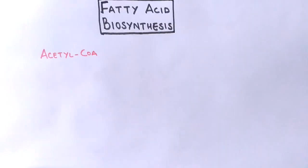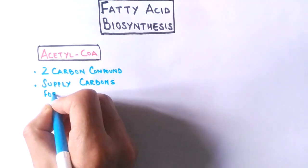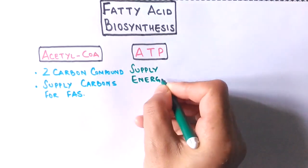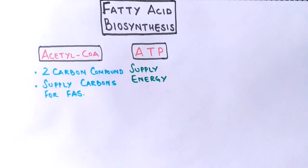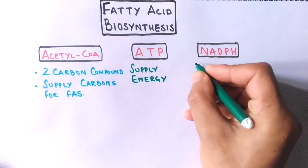Now in cytosol we have the acetyl-coenzyme A molecule which supplies 2 carbons for the growing fatty acid chain. We have ATP which is needed to drive this reaction, supplying energy. And finally, we have a reducing agent equivalent which is the NADPH molecule, also in cytosol.